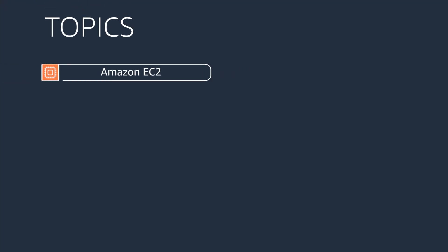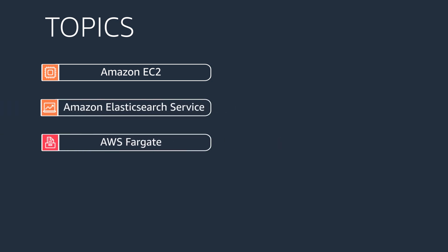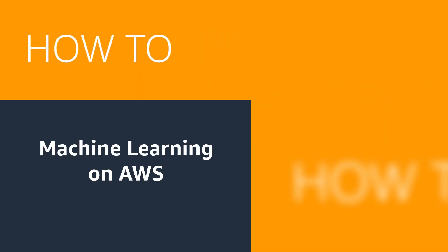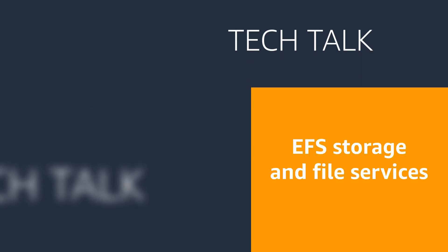This September, we've got Tech Talks on Amazon EC2, Amazon Elasticsearch Service, AWS Fargate, Amazon FreeRTOS, and Amazon GuardDuty. Are you struggling to build AI-powered applications? We've got the cheat sheet for using machine learning on AWS. Plus, don't miss our full-day cram session on Amazon EFS — three Tech Talks in one day covering storage and file services.